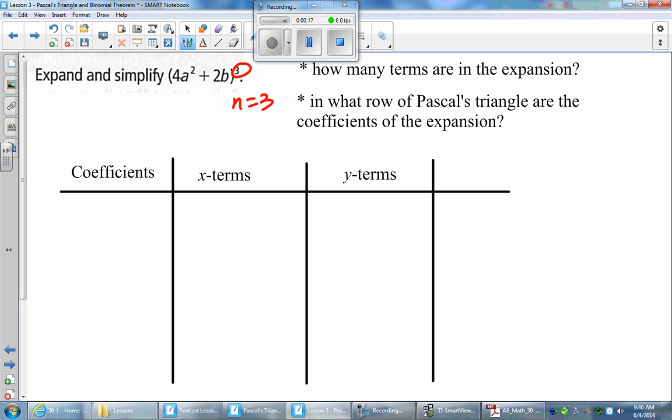How many terms are in this expansion? It's actually one more than n, so n plus 1, which is 3 plus 1. We get four terms in total. And then what row of Pascal's triangle will this come from? Well, since we have four terms, that's actually going to be our row number as well. So we're looking at row 4 of Pascal's triangle here.